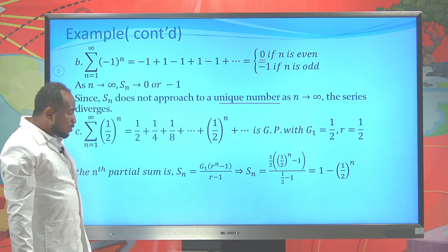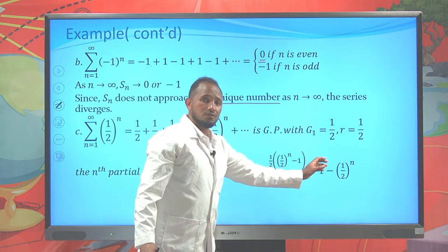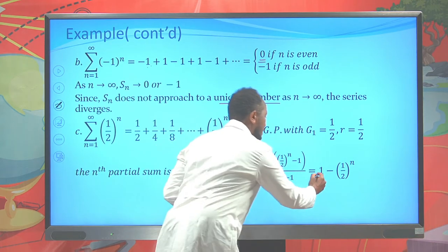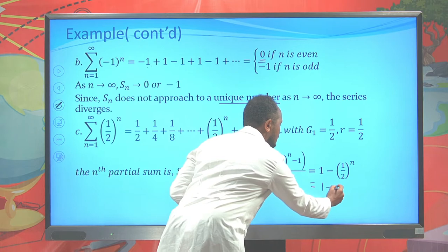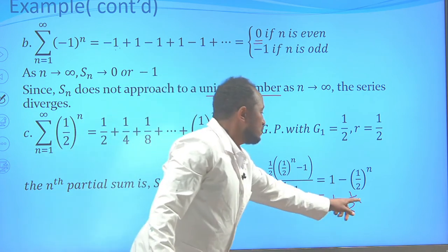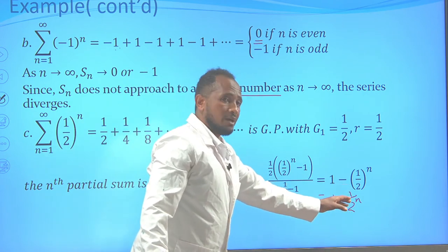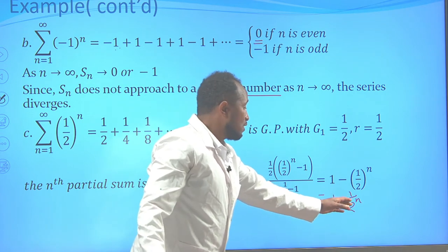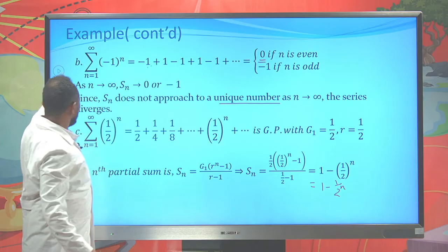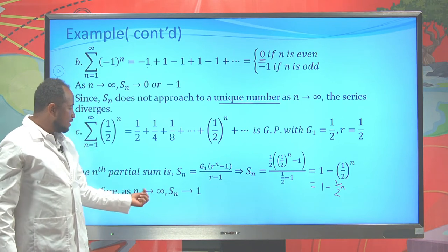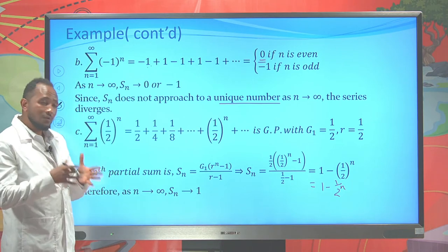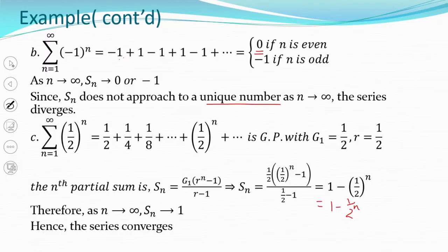When n goes to infinity, (1/2)^n goes to 0 since 1 divided by a very large number approaches 0. So S_n approaches 1 − 0 = 1. Therefore this sequence converges to 1. Since it converges to a unique finite number, the series converges.